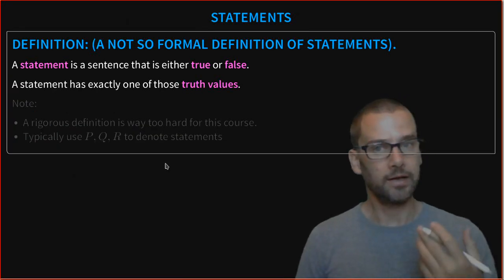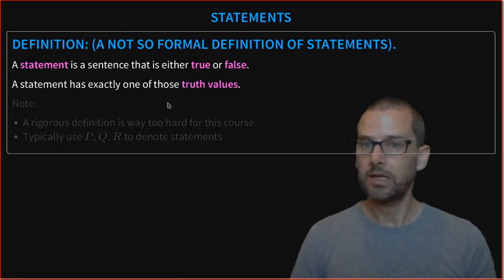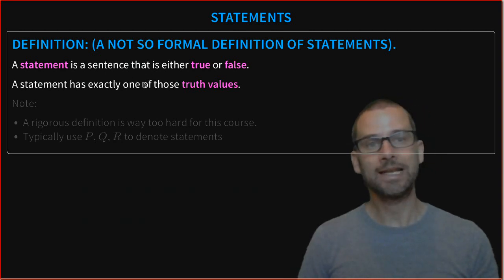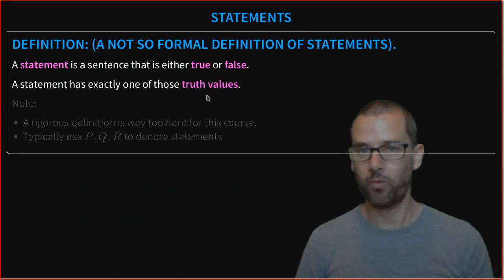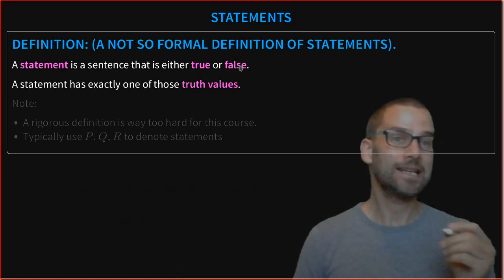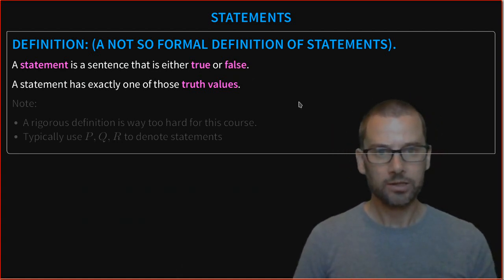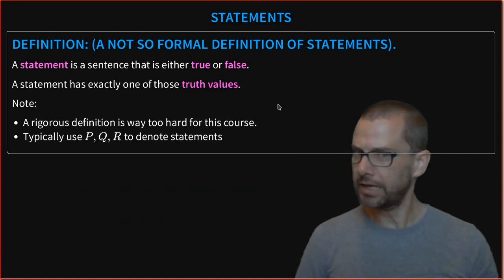A not-so-formal definition of a statement is: a statement is a sentence that is either true or false. In particular, it has exactly one of those two truth values. It's either true or it is false. It can't be neither and it can't be both. Note,